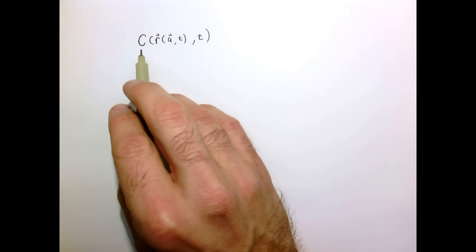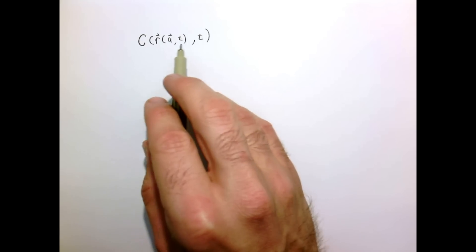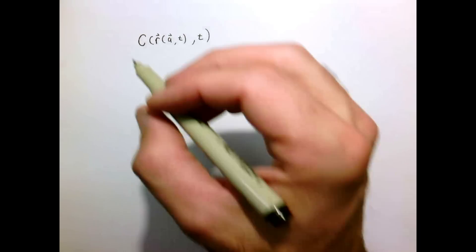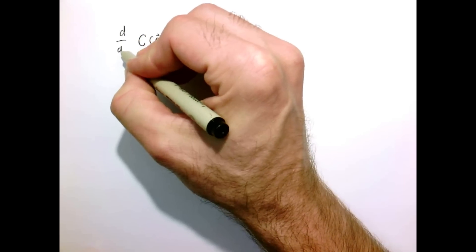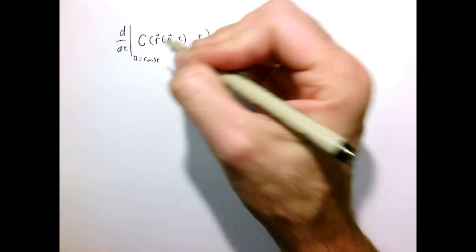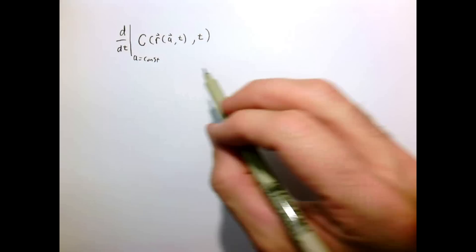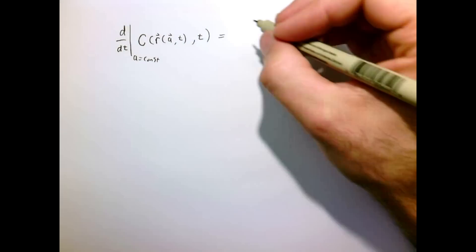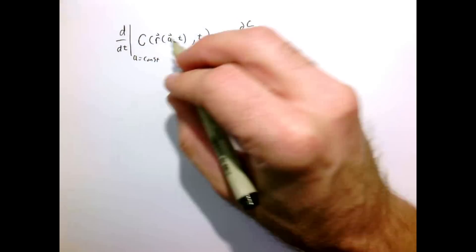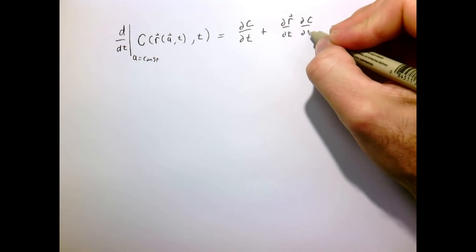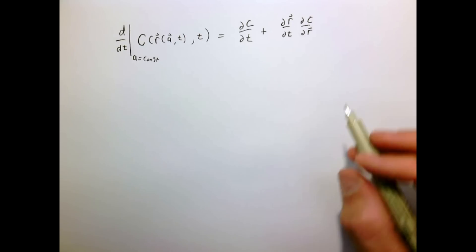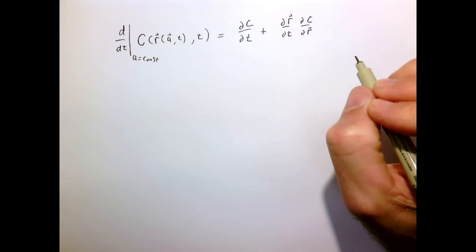Okay, so we have our concentration field which is going to be a function of position in time and our position is a function of the particle's initial position in time as well. So this is kind of a funny thing but let's take the time derivative of that. So I'm going to take d by dt holding a constant. So I'm going to take the time derivative of the concentration field for a particular particle. So I just need to follow the chain rule. I have the time derivative of the field itself plus this other term which has to do with the time derivative of the position. And remember this is holding a constant so this is for a particular fluid particle.